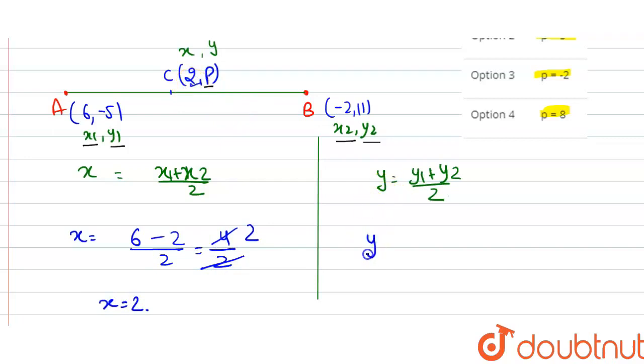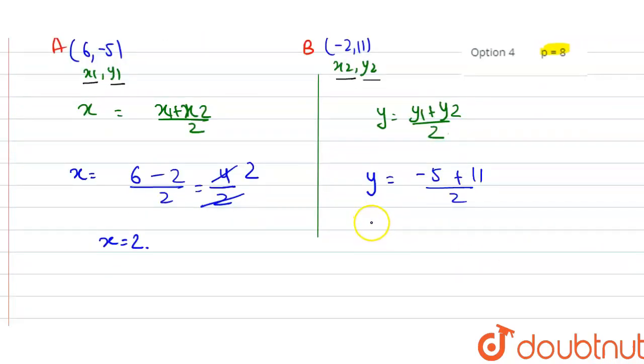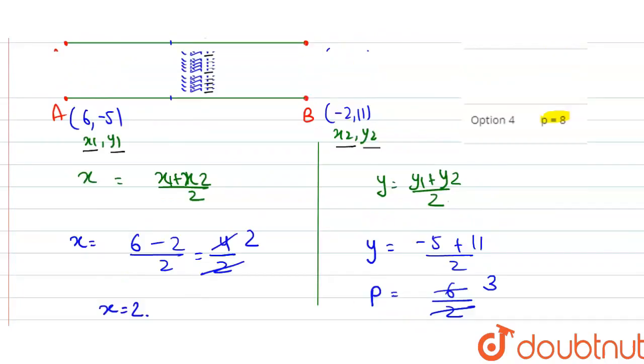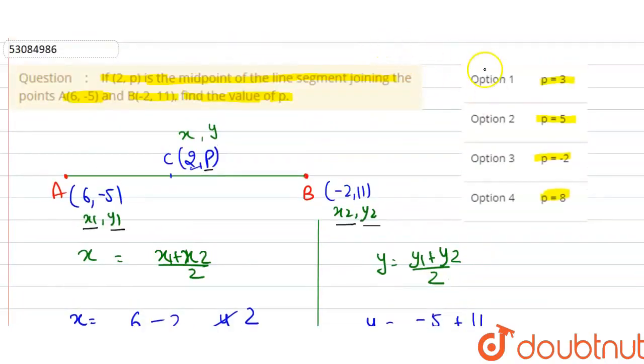Now find the y-coordinate. We have y1 is -5 and y2 is 11. So -5 plus 11 divided by 2. The value is 6 divided by 2, which equals 3. So p equals 3, which is our final answer for this question. This answer matches with option A, so option A is our correct answer. Thank you.